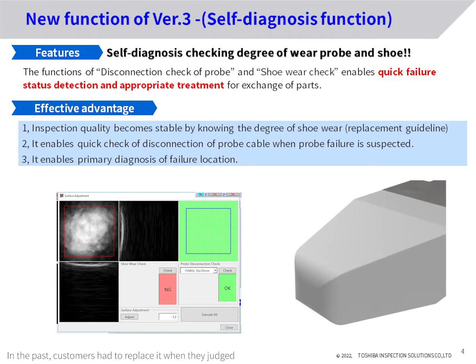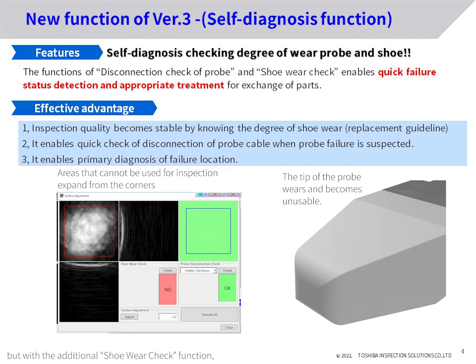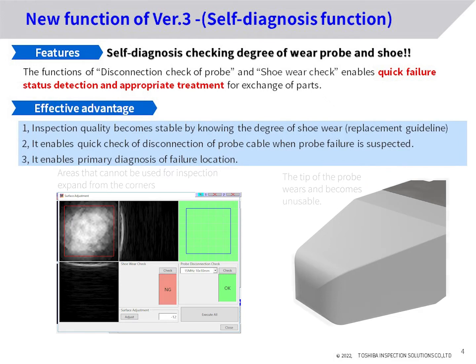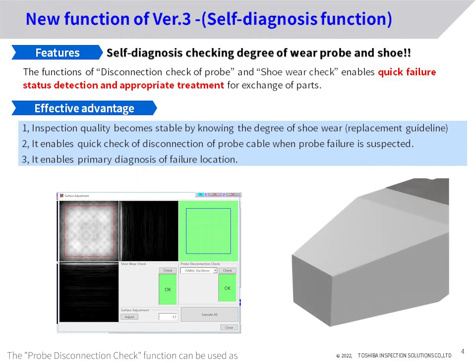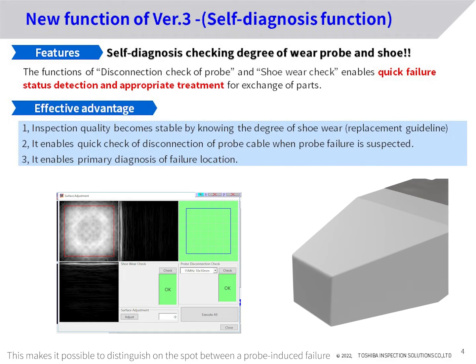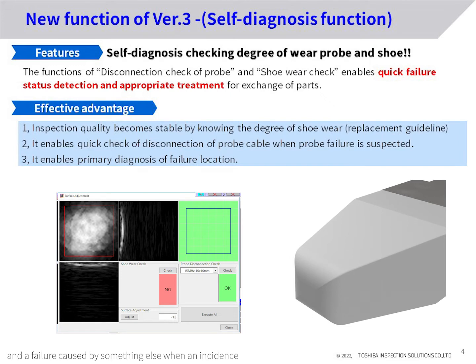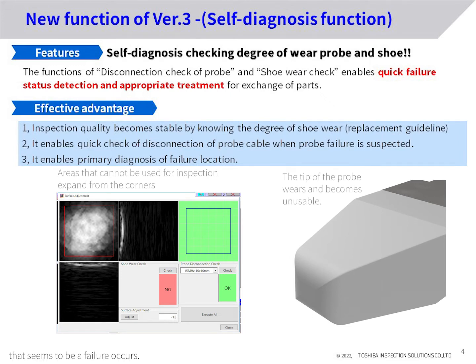In the past, customers had to replace the shoe when they judged that accuracy had deteriorated, but with the additional shoe wear check function, it is now possible to objectively know when to replace it. The probe disconnection check function can be used as the initial diagnosis when an incident that seems to be a failure occurs. This makes it possible to distinguish on the spot between a probe-induced failure and a failure caused by something else.